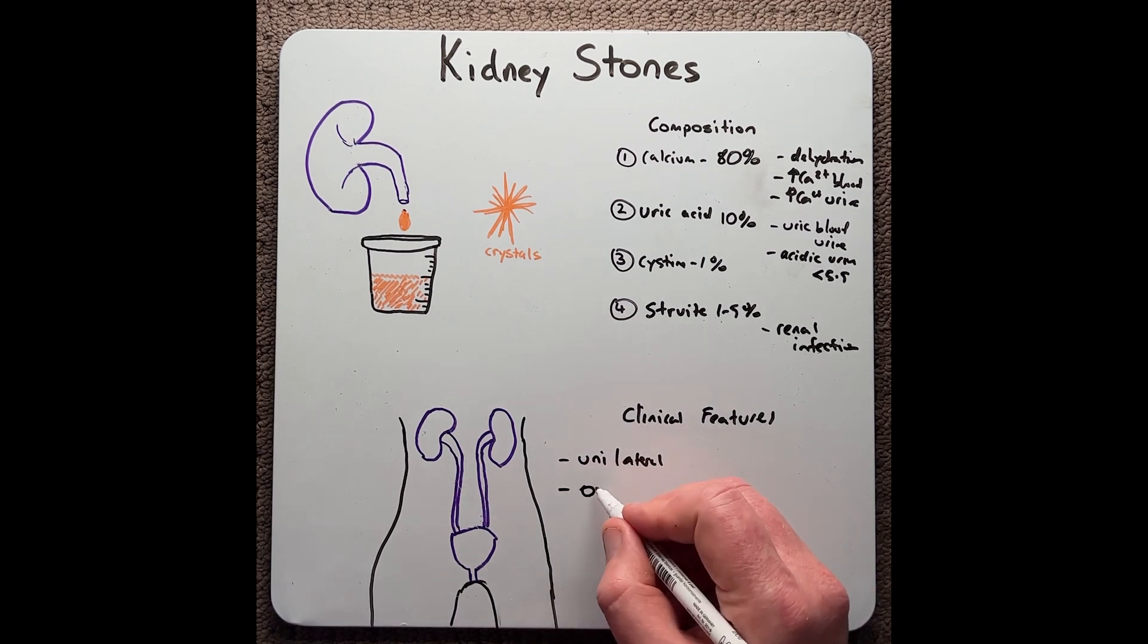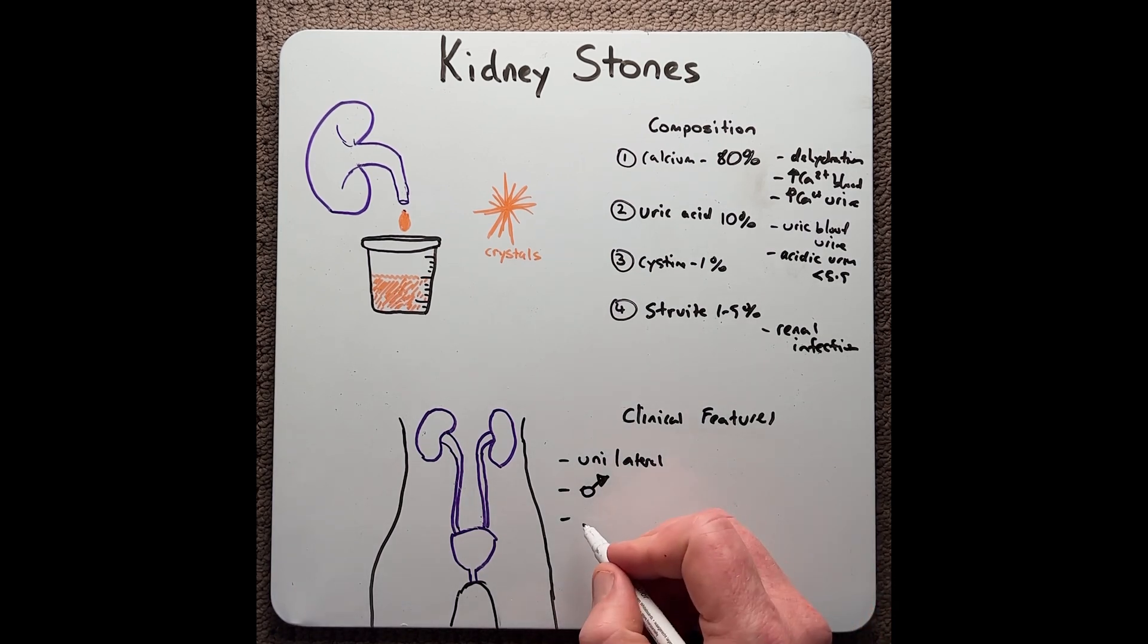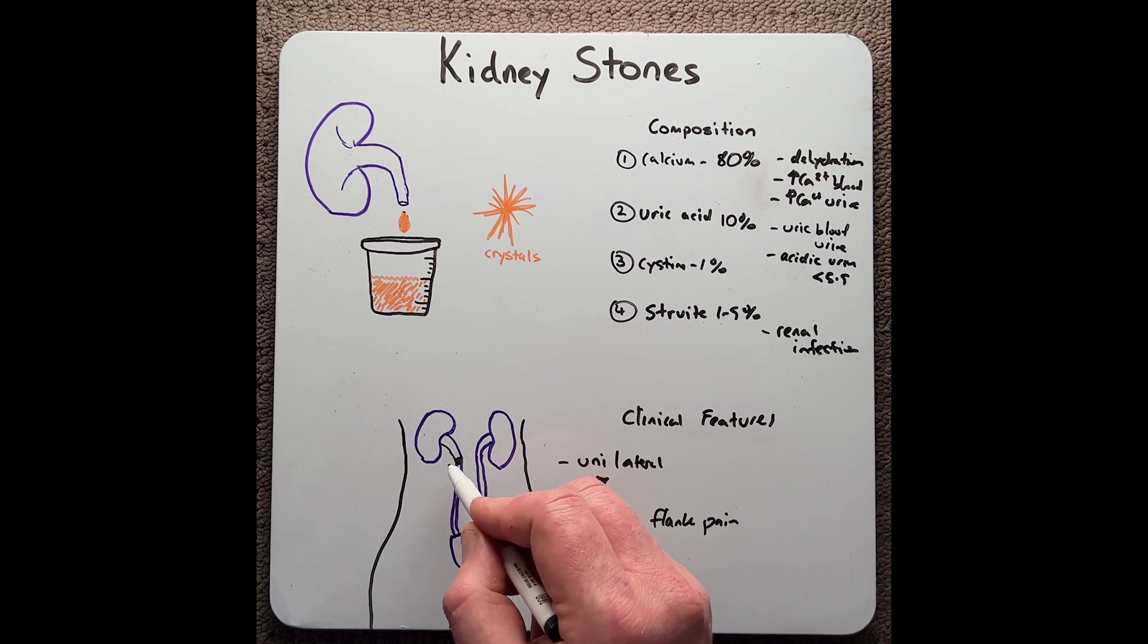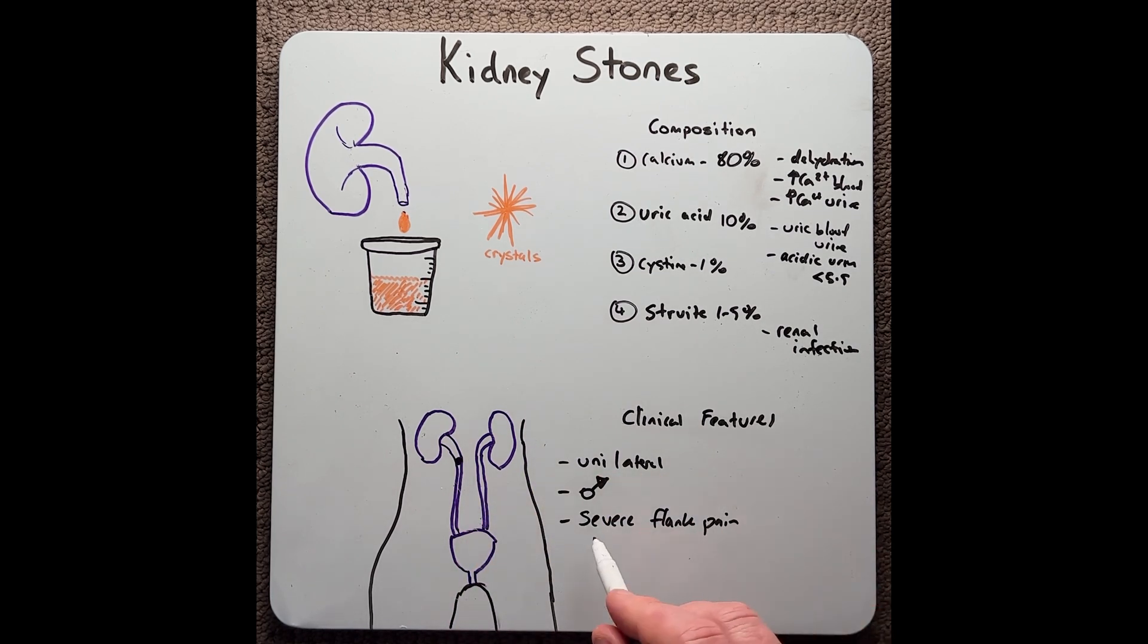They're more commonly in males. The most common symptom being severe flank pain. This is caused by the stone being caught in the ureta, which increases the pressure, but also the muscles contracting against the stone, causing extreme renal colic and severe pain, which can radiate down to the groin.